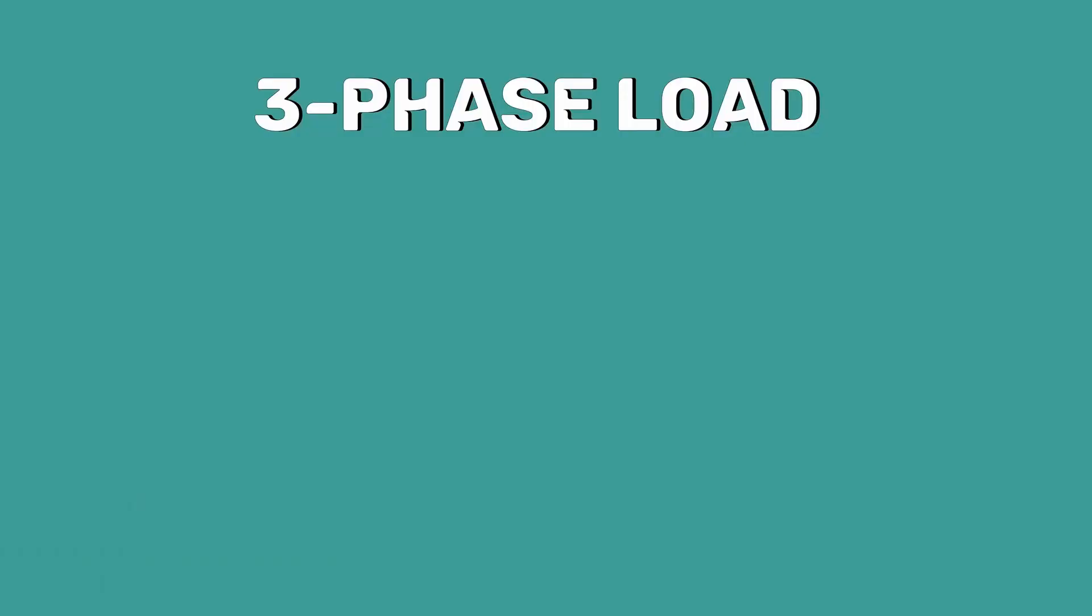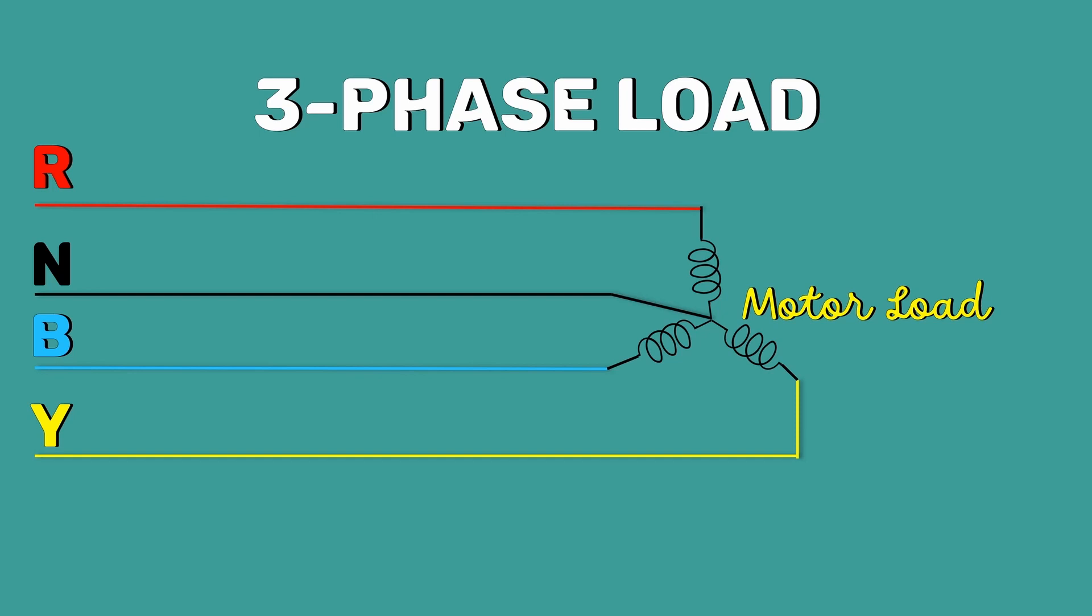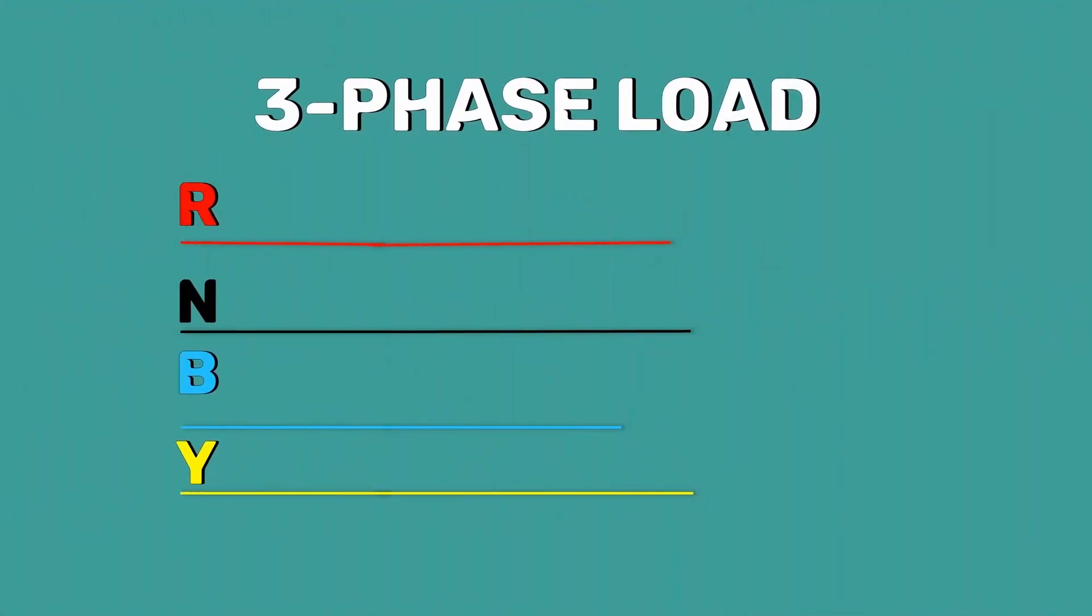We can obtain three phase loads in two ways. Firstly, we have three phase motor loads. Secondly, we can connect different single phase loads between any line and the neutral. Now, this also acts as a three phase load.